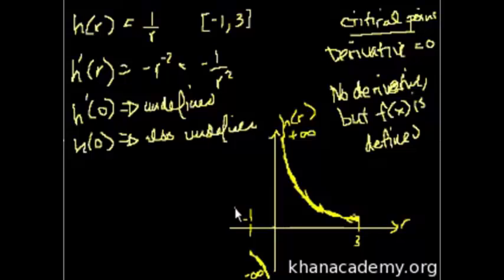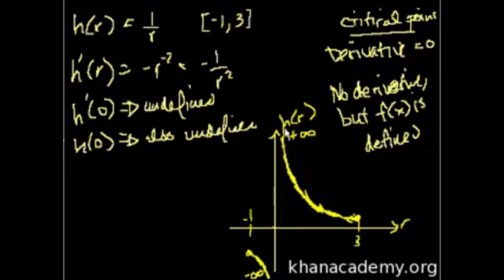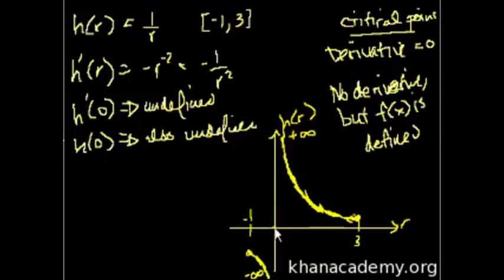What are the maximum and minimum points? Looking at this graph, you might think the endpoint value at h of negative 1 is a minimum, but no — there are values going to minus infinity in this interval. And there's no maximum either, because values go to positive infinity. There is actually no maximum or minimum, because the graph is undefined at 0. If you claim a point very close to 0 is the maximum, there's always a point even closer with an even higher value. So there is no exact point that is the maximum value.